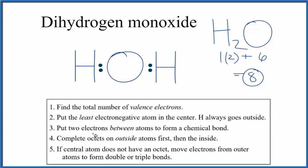Next, we'll complete the octets on the outside, but hydrogen only needs two. So the hydrogen atoms are okay. So let's go back inside and complete the octet here on the oxygen atom. And now we've used two, four, six, eight valence electrons. That's all we have. But the oxygen has an octet, the hydrogens have octets. This is the Lewis structure for H2O dihydrogen monoxide.